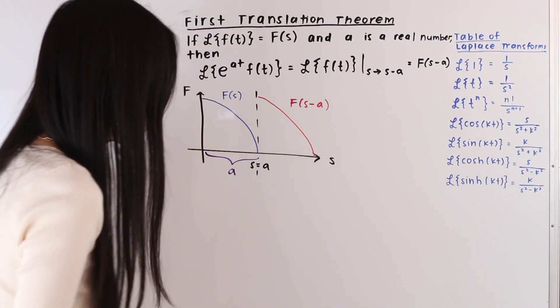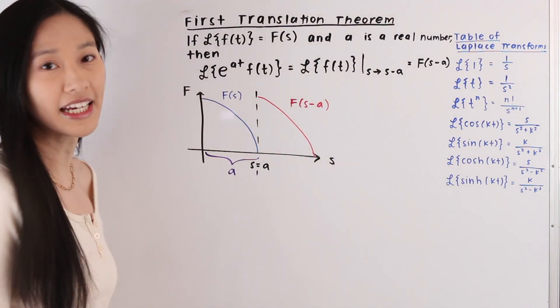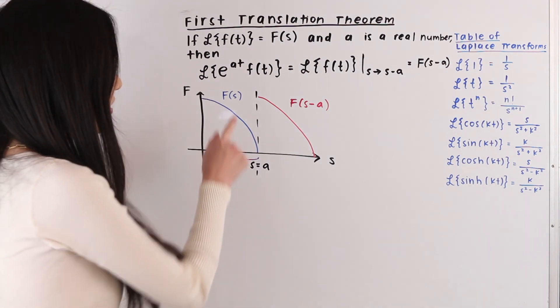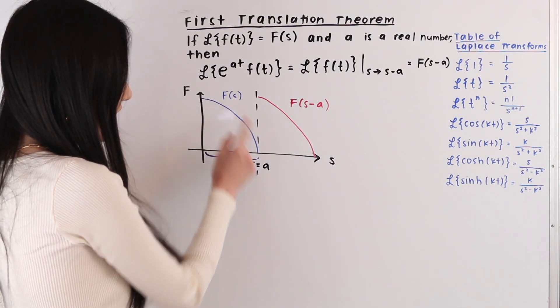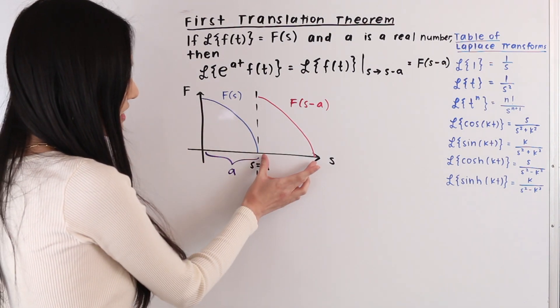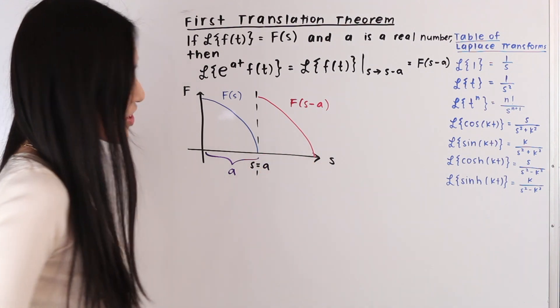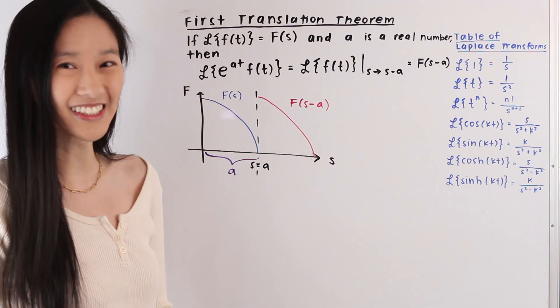Graphically, what's happening is we are taking the Laplace transform of f of t, which is F of s, and we're shifting it on the s-axis by an amount a. So let's go ahead and take a look at some examples.